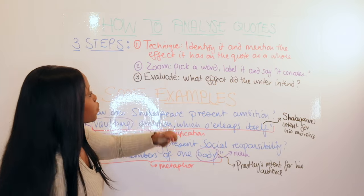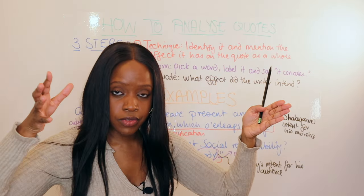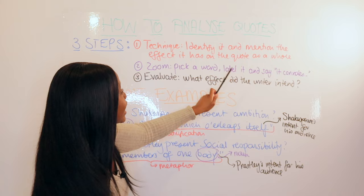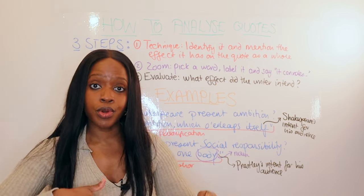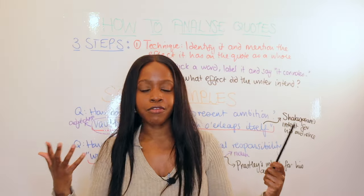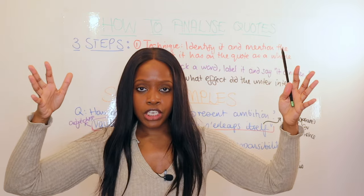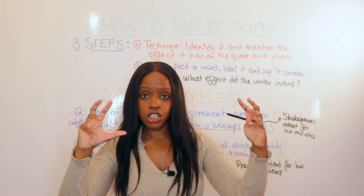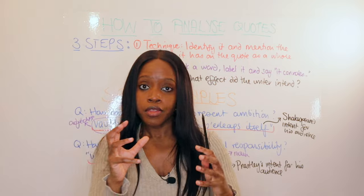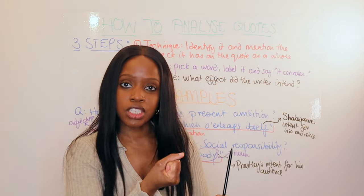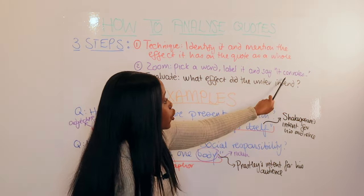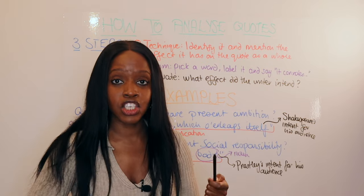Step two: zoom in just a little bit more. Pick out a word from the same quotation, label that word, and then mention how it suggests or connotes a certain image or effect. For example, if you select a quotation that uses a metaphor and within that quotation you find the word 'red,' you zoom in, label 'red' as an adjective, and mention how this adjective connotes or indirectly suggests danger.